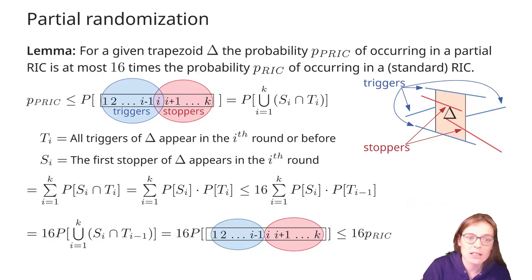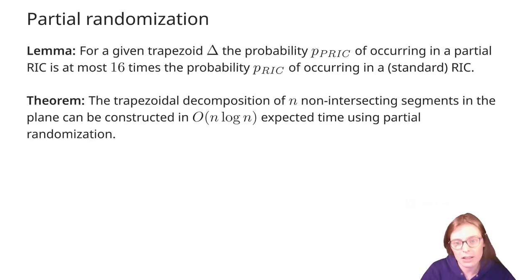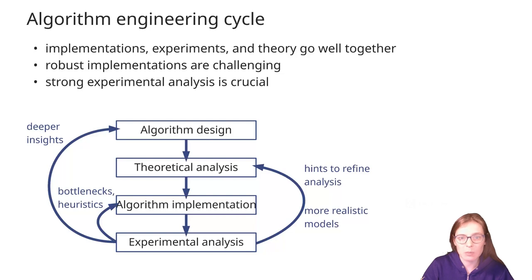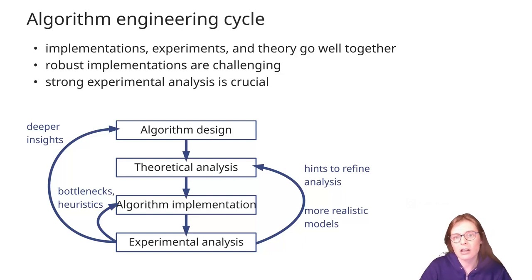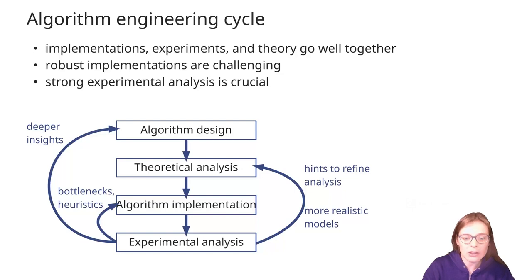So we have proven the lemma, and now using it we can prove the following theorem: the trapezoidal decomposition of n non-intersecting segments in the plane can be constructed in O(n log n) expected time using partial randomization. The proof of this theorem is analogous to the proof from the previous lecture. To summarize what we've learned today: implementation of algorithms, running experiments, and theory go well together. Producing robust implementations is challenging, but luckily there are libraries that we can use to help us. Performing experimental analysis is crucial because it can lead to unexpected findings that allow us to improve not only the implementation but also to develop new theoretical results.